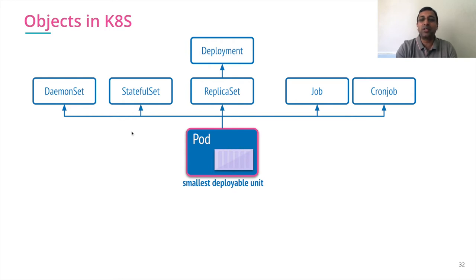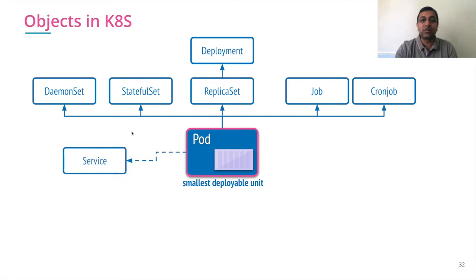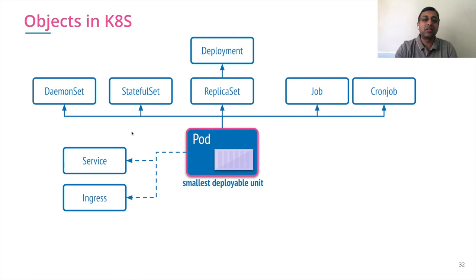Jobs and CronJobs spin up, do their job, and complete. The abstraction on top of pod is called Services, which provides you with discoverability within the Kubernetes ecosystem. There is another type of special service called Ingress controllers.